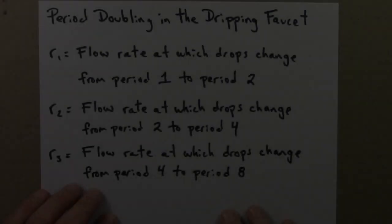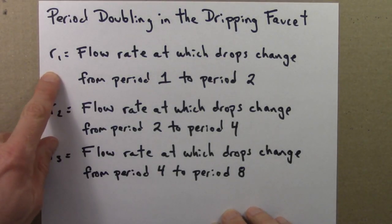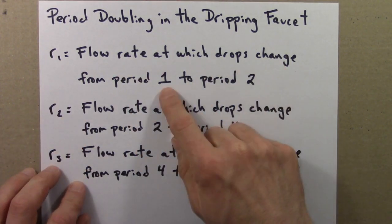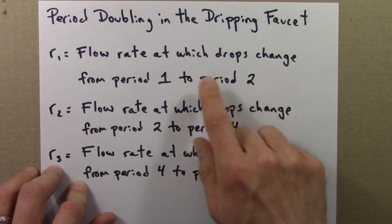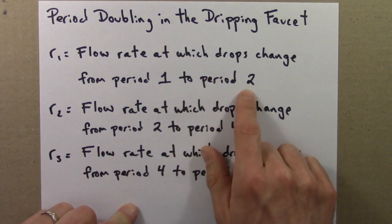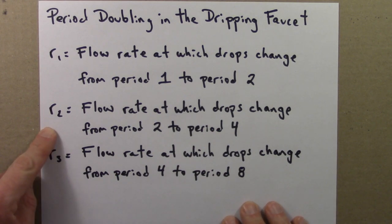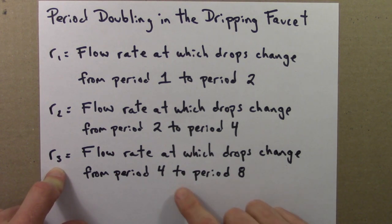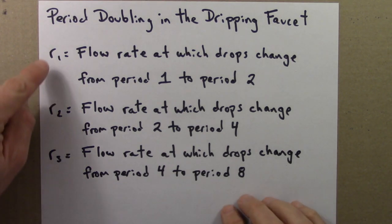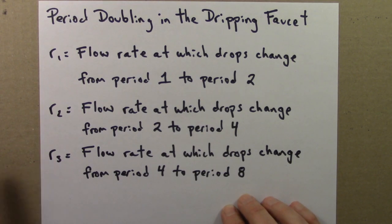So we can analyze those parameter values — the parameter values at which the bifurcations occur — and calculate deltas just like we did for the bifurcation diagram. We'll let R1 be the flow rate at which the drops change from period 1 to period 2, R2 be the flow rate at which drops change from period 2 to period 4, and R3 be the flow rate at which drops change from period 4 to period 8.